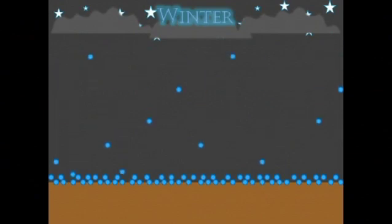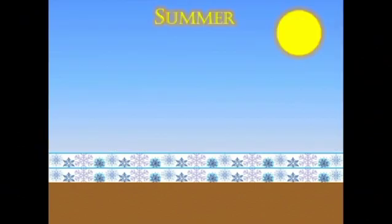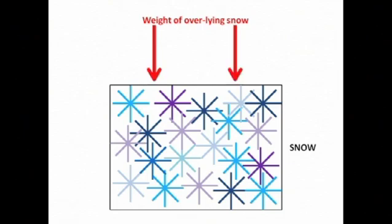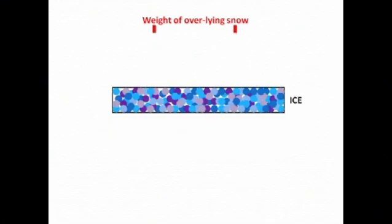So we end up with a pattern where every winter snow falls, and every summer it doesn't melt away. Over time, a thick deposit of snow builds up. As the snow continues to pile up, it becomes heavy and the deposit starts compacting from snow to a dense layer called firn, and finally to pure ice.